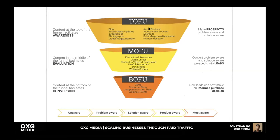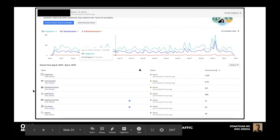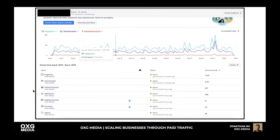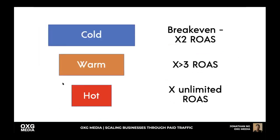These are terms you need to know: top of funnel, middle of funnel, bottom of funnel. Top of funnel standard events are page view and view content. Middle funnel would be people who've watched your video or clicked your page but haven't bought. Bottom of funnel is initiate checkout and add to cart.